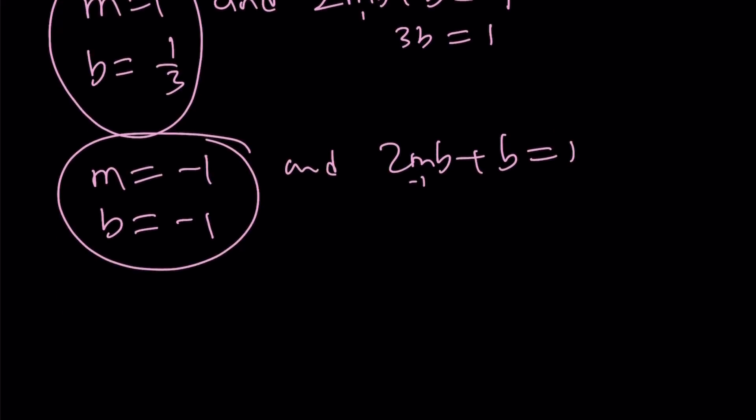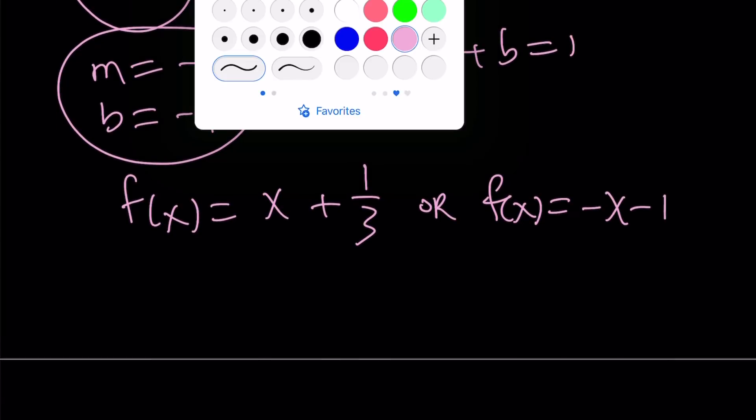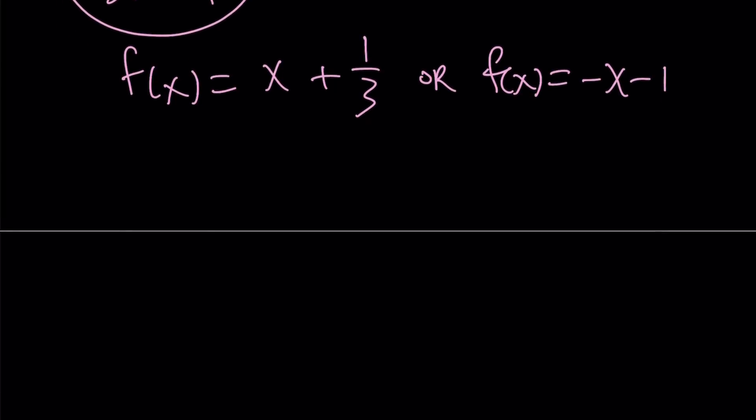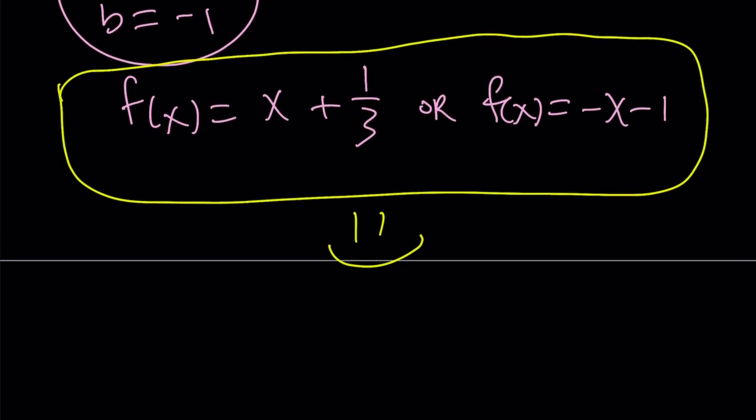So we get two sets of values. And this implies that f(x) can be written as x + 1/3 or f(x) can be written as -x - 1. So those are going to be the two solutions to our functional equation. And this brings us to the end of this video. Thank you for watching. I hope you enjoyed it. Please let me know. Don't forget to comment, like, and subscribe. I'll see you tomorrow with another video. Until then, be safe. Take care and bye bye.